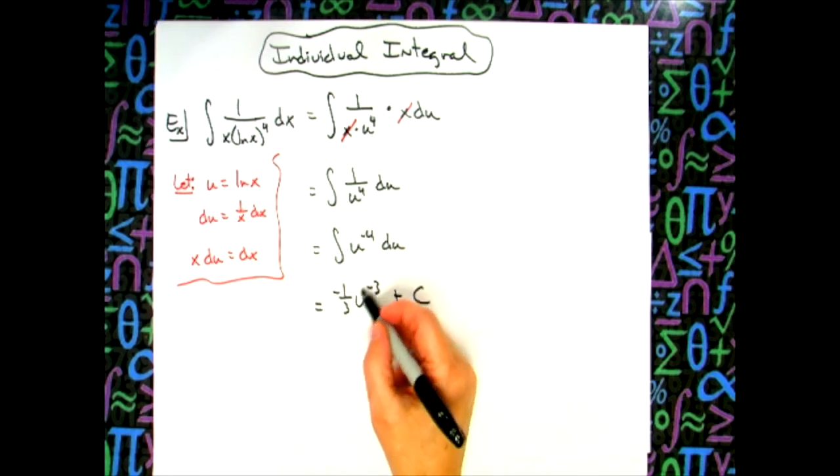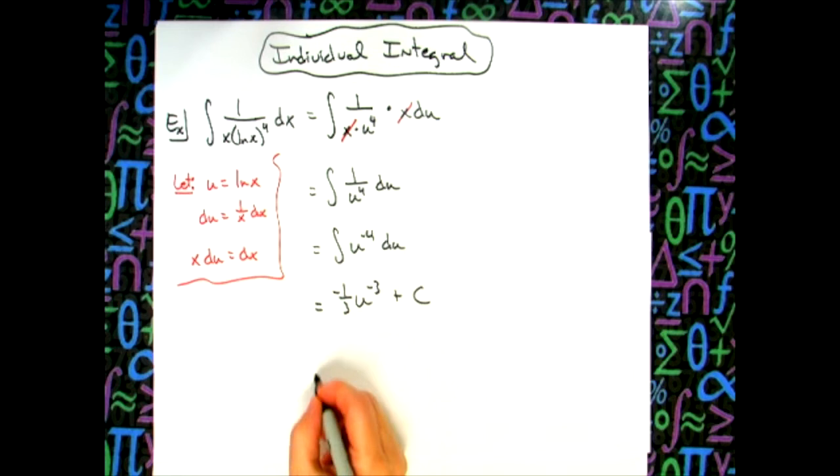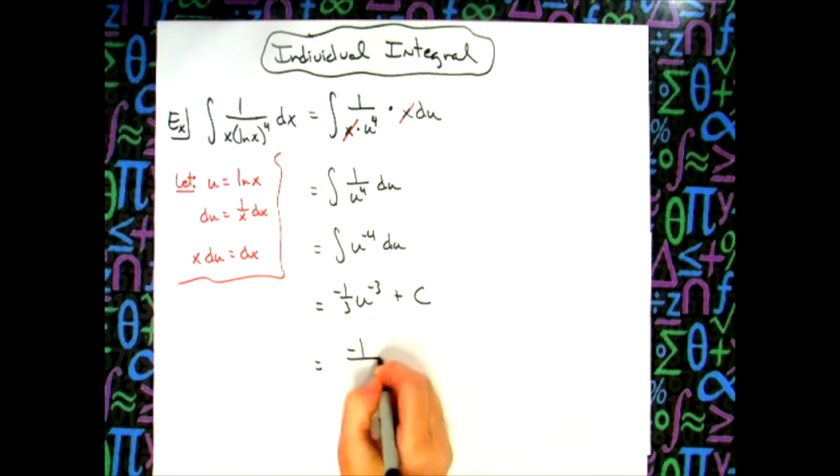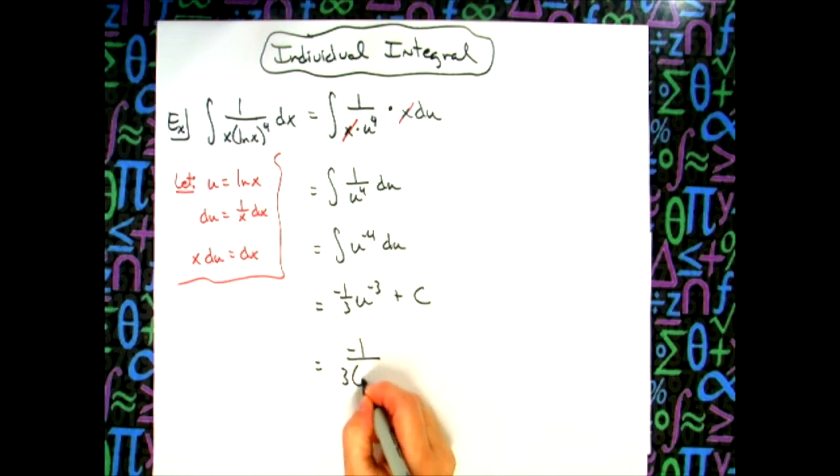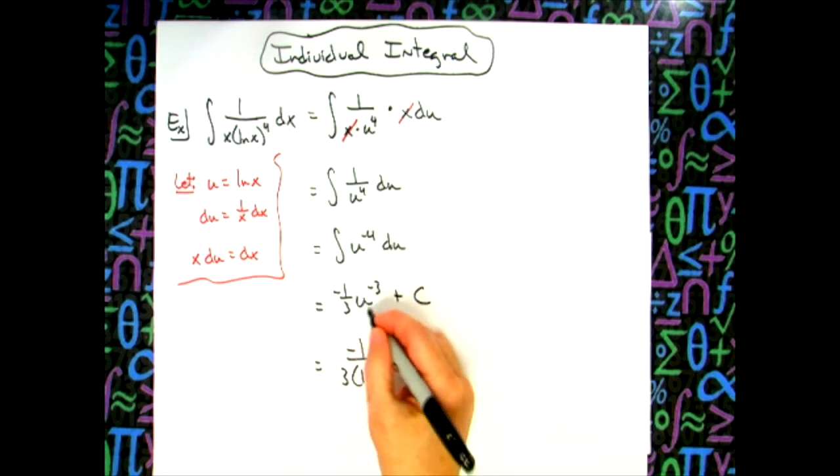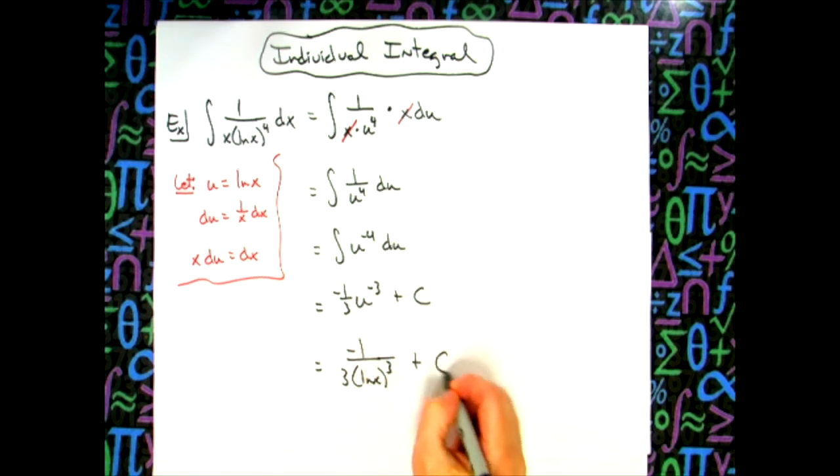Now just to clean this up a little bit, we're going to move this to the bottom, make it a positive and replace the u with what it equals. So I'll have a negative 1 on top. I'll have a 3, replacing u, I'll have natural log of x. So natural log of x raised to that third power because we moved this to the bottom, made it positive, and then plus c.